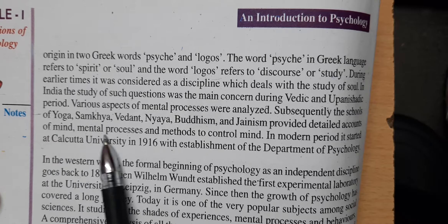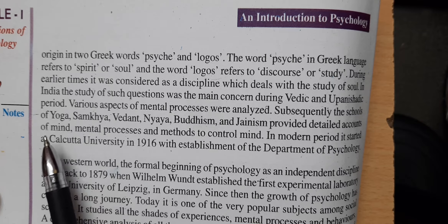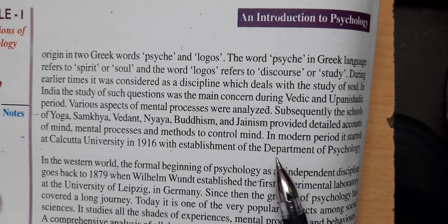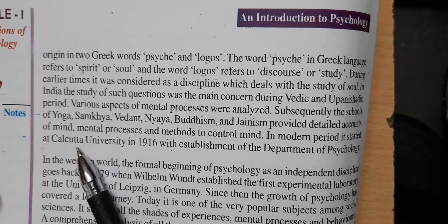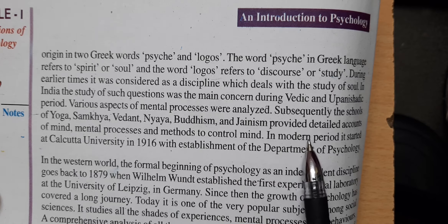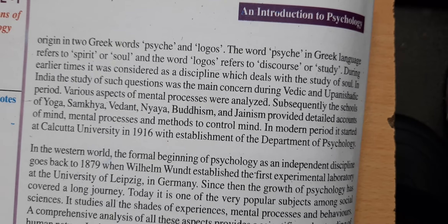It was about mind, mental processes, and methods to control the mind. For example, if you are angry, you go for yoga. There are many things to understand about how a person's mind processes and how they react in different situations. In the modern period, Calcutta University in 1916 established a department of psychology, which was considered a comprehensive study of a person's mind.